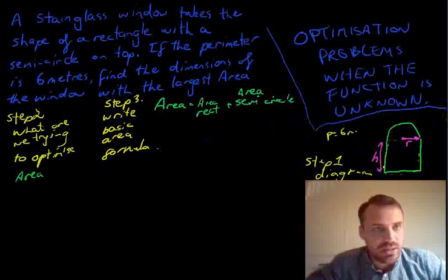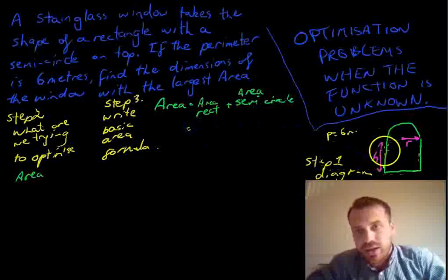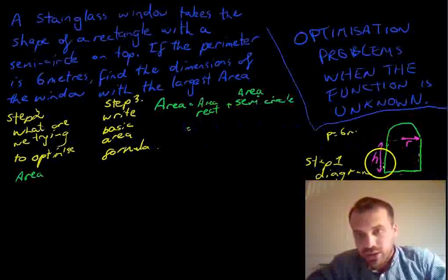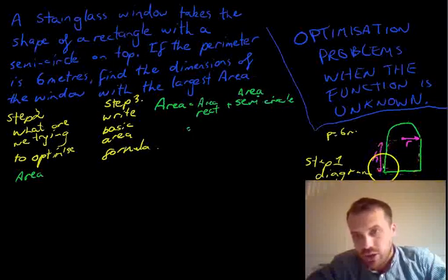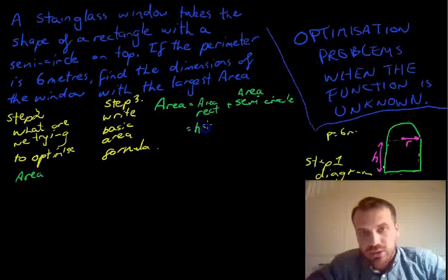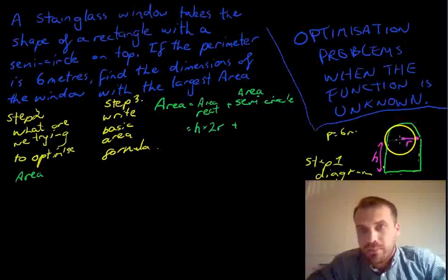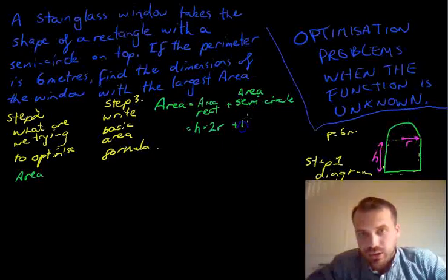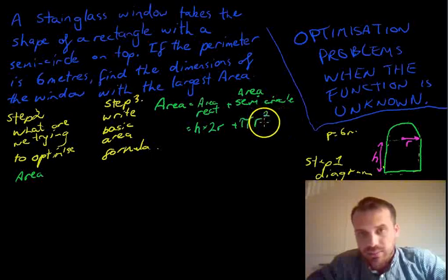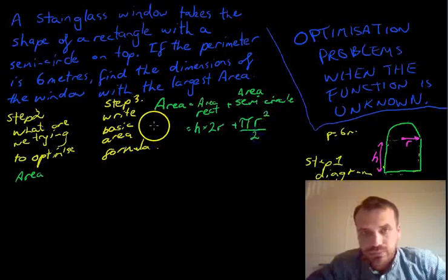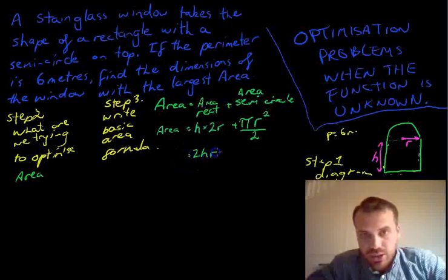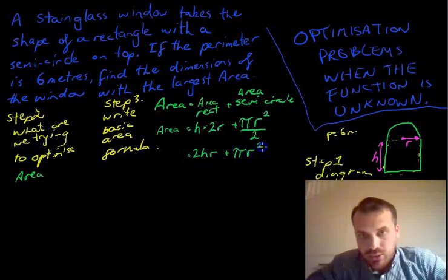So let's think a little bit now about fixing up this area formula. The area of the rectangle is going to be height times width, which is height times 2R. Plus the area of the semicircle, which is going to be pi R squared - that gives me a full circle - divided by 2. That'll give me a semicircle. We can probably just tidy that up a bit. 2HR plus pi R squared over 2.